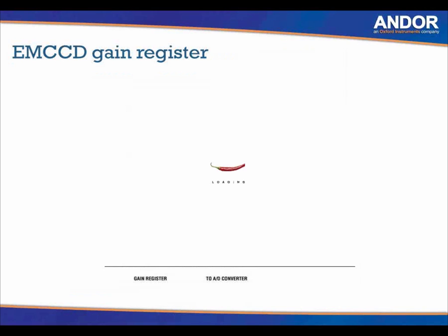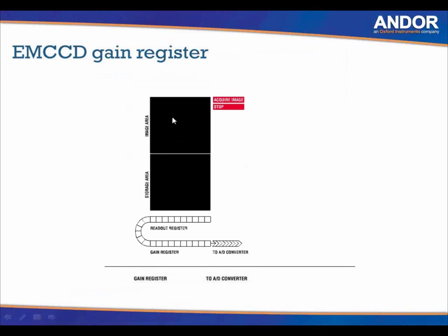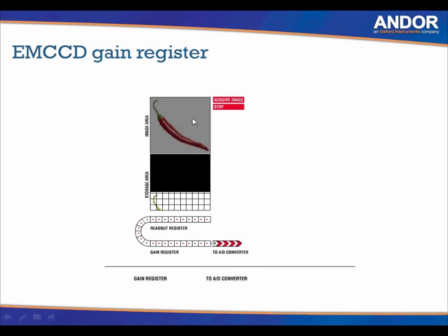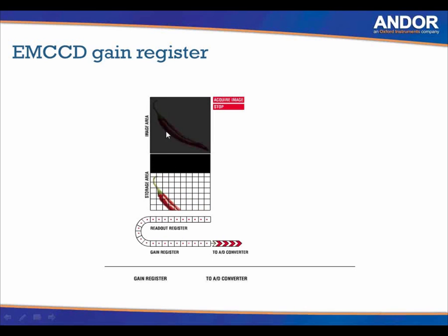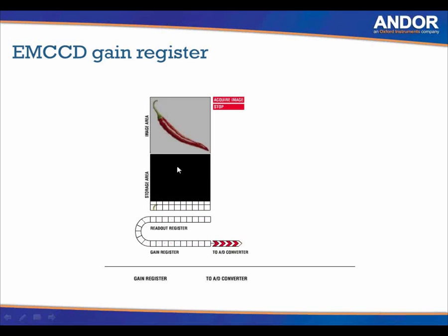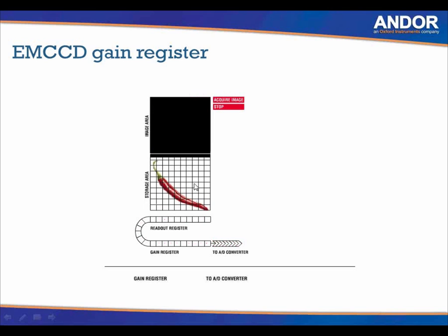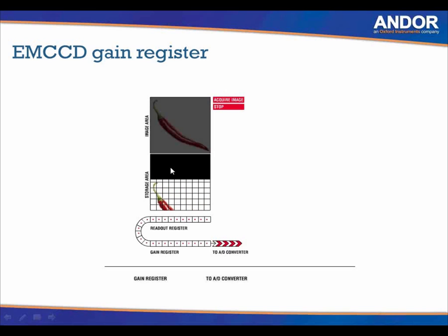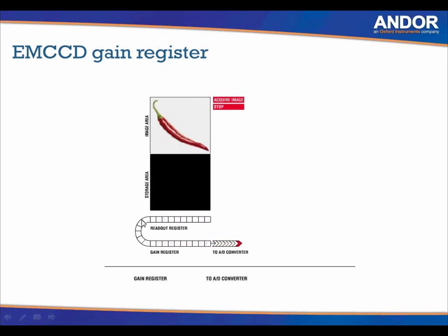EMCCD cameras are frame-transfer cameras — essentially they have two sensors. The top part is the image area, which is always exposed to light, and the second part is the storage area, which is never exposed to light and has an aluminum mask over it. As soon as the camera is exposed to light, it sends all information down to the storage area, where vertical shifting takes place — photons are transferred from row to row, pixel to pixel, all the way down the sensor into the readout register. The transfer inside the storage area is vertical, and in the readout register it is horizontal.